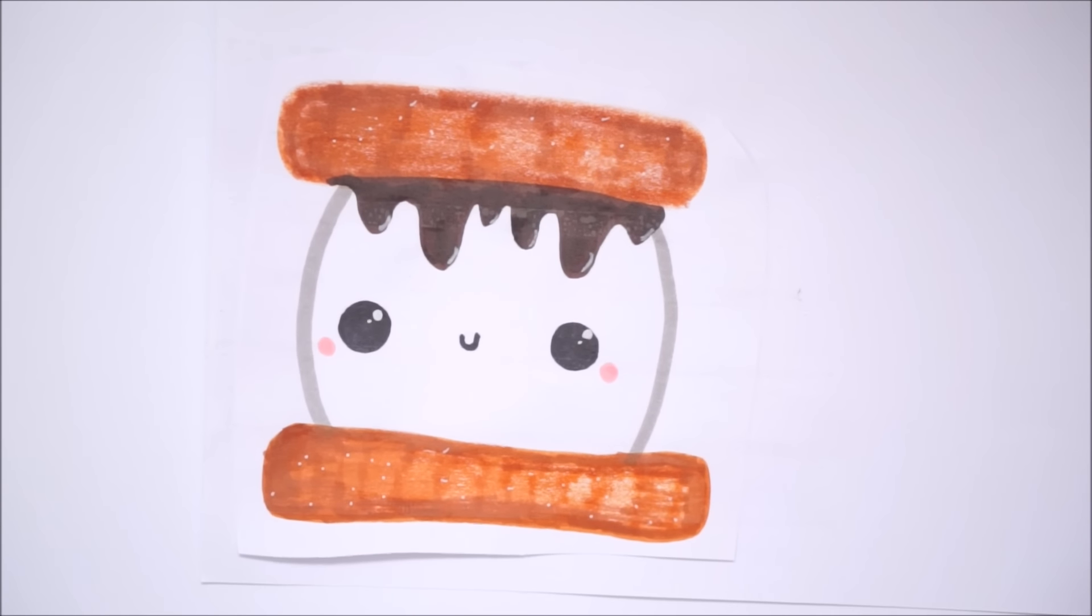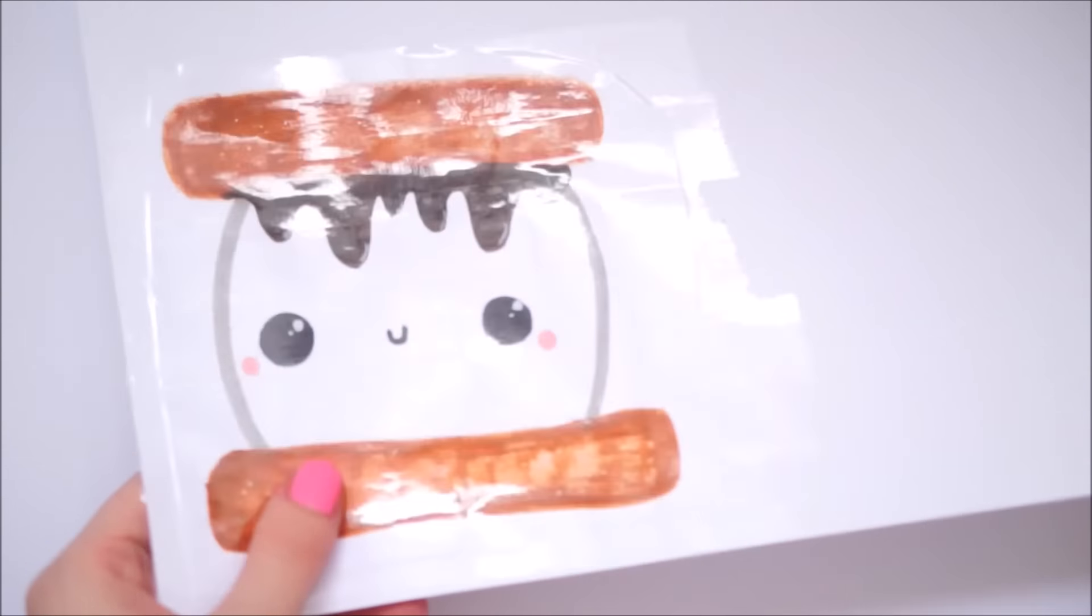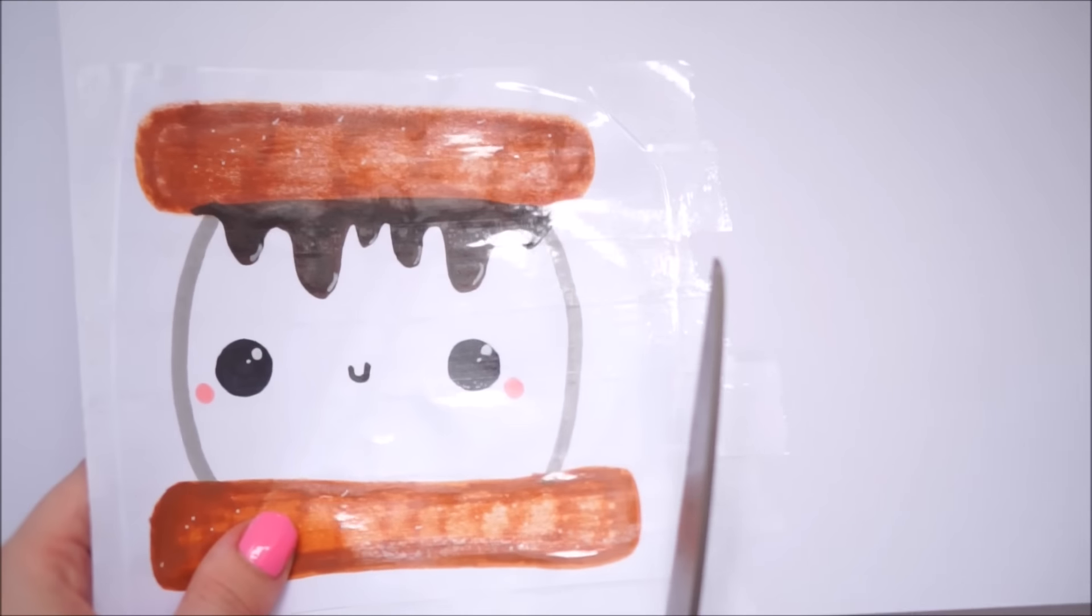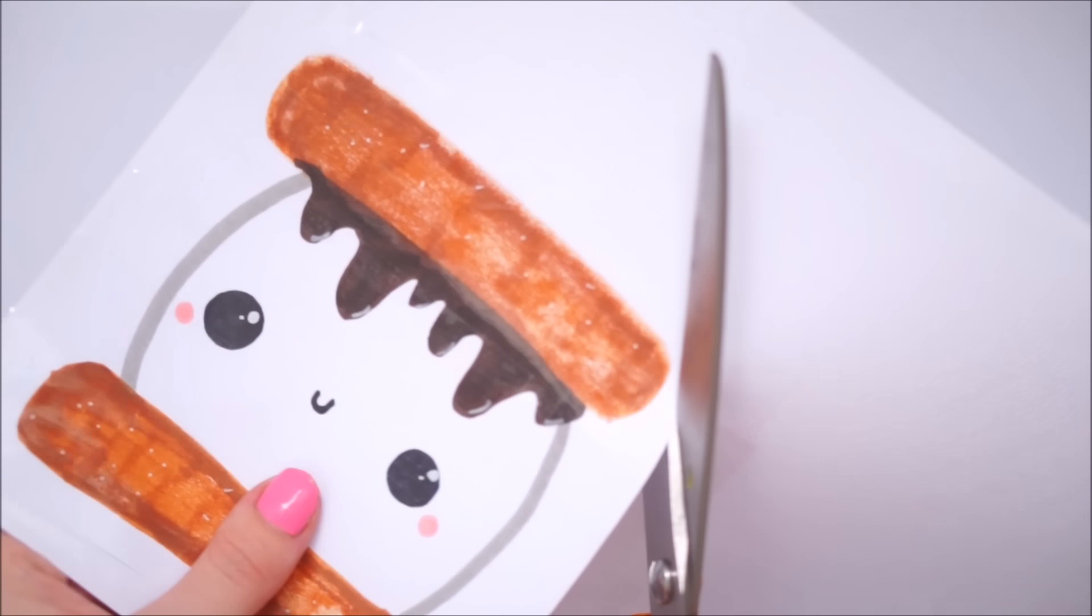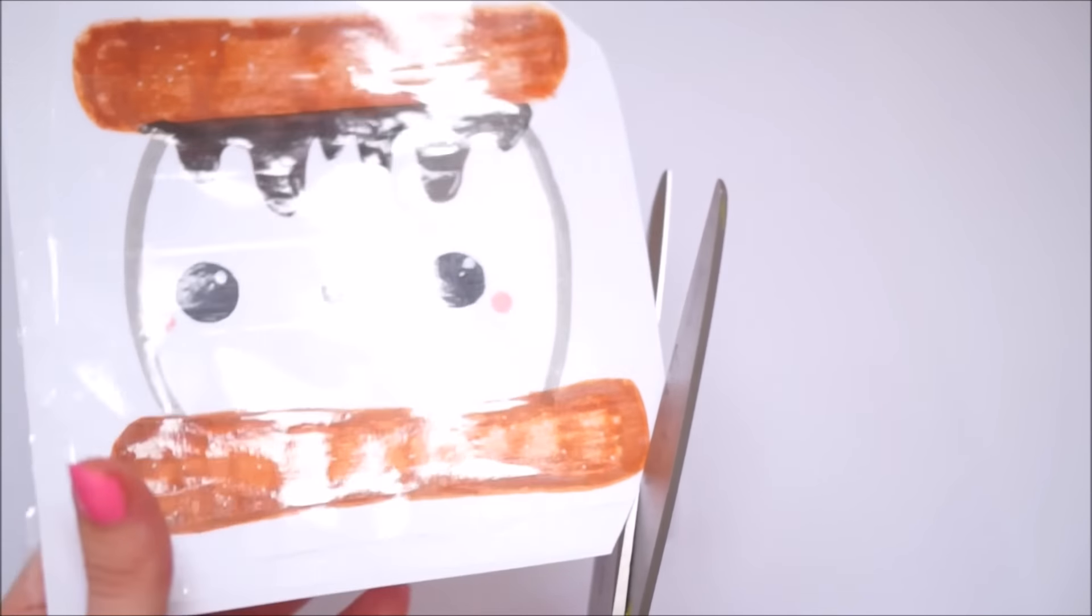Once I had taped all the way from the top to the bottom, I took my scissors again and roughly cut the shape out. Then I cut out exactly where I wanted it to be on all the edges apart from one of the biscuit edges.